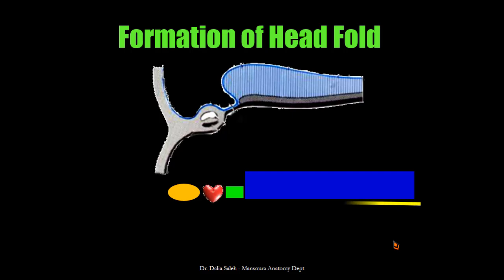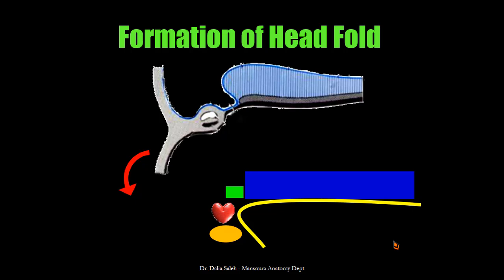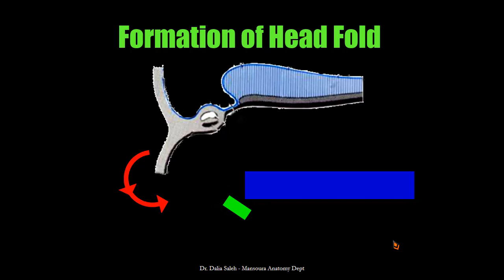Remember that it is lined ventrally by the endoderm of the yolk sac. As a result of the rapidly growing brain region or forebrain, the embryo is forced to bend ventrally. The heart moves downward and so does the septum transversum, with this endodermal lining of the yolk sac. With further growth of the forebrain, there is more ventral bending of the embryo, so the buccopharyngeal membrane, instead of being cranial, will become ventral. The heart will move ventral to the neural tube and below the buccopharyngeal membrane, and so will the septum transversum.